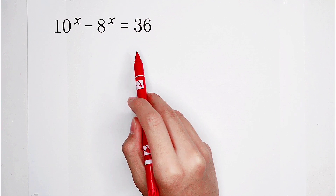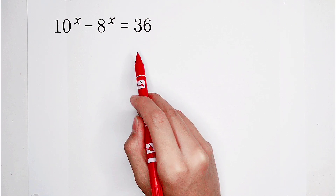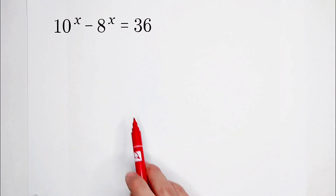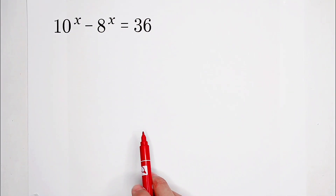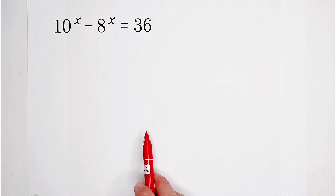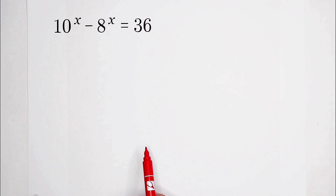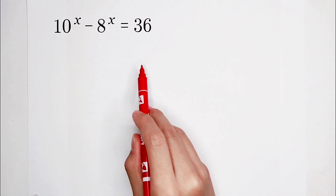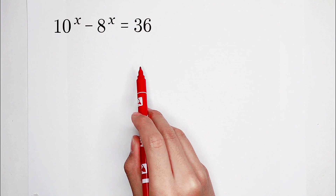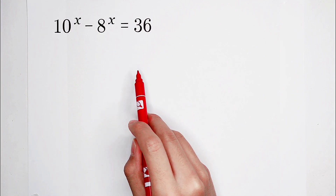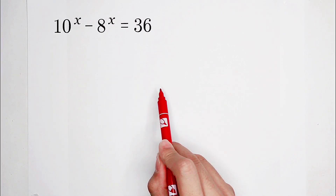How to solve it? Maybe you think it is so hard. However, I'm going to say that's easy. What have you noticed? Look at the right-hand side: 36. It is a square number — it is 6 squared.